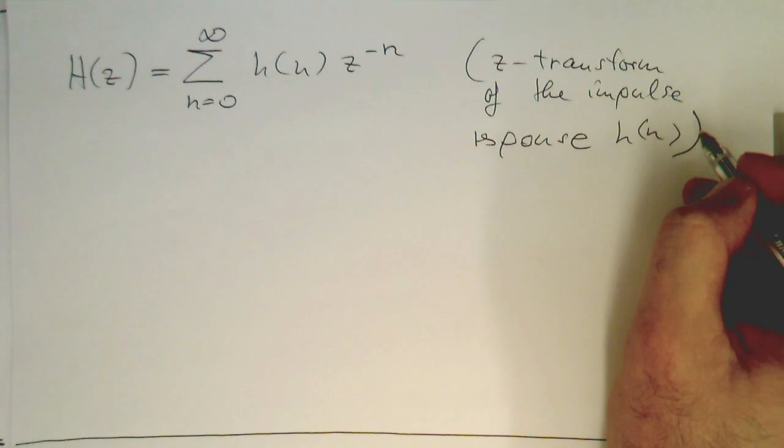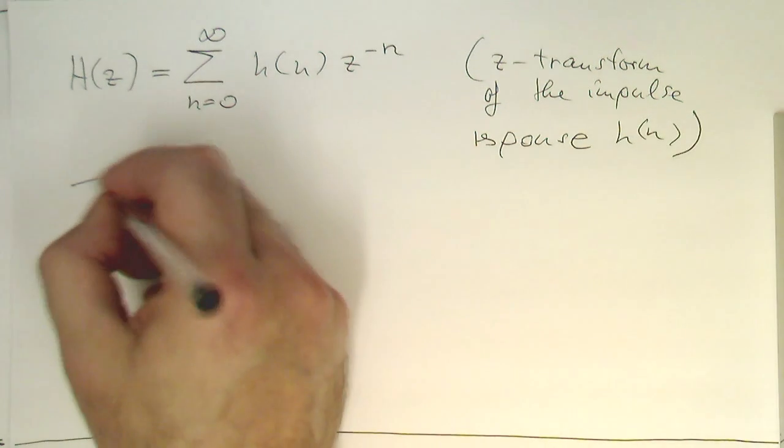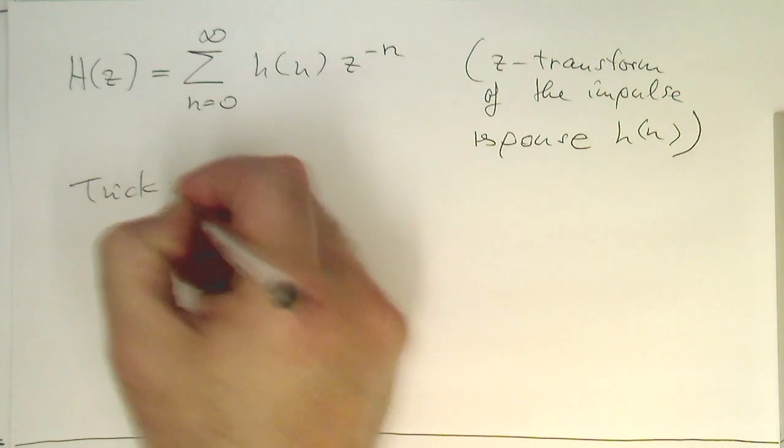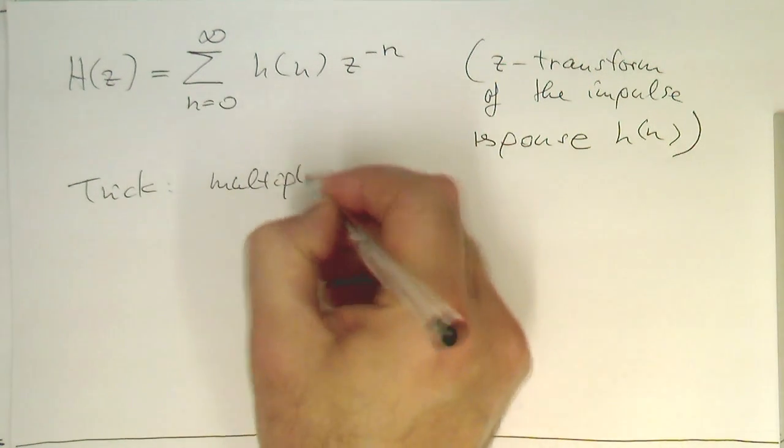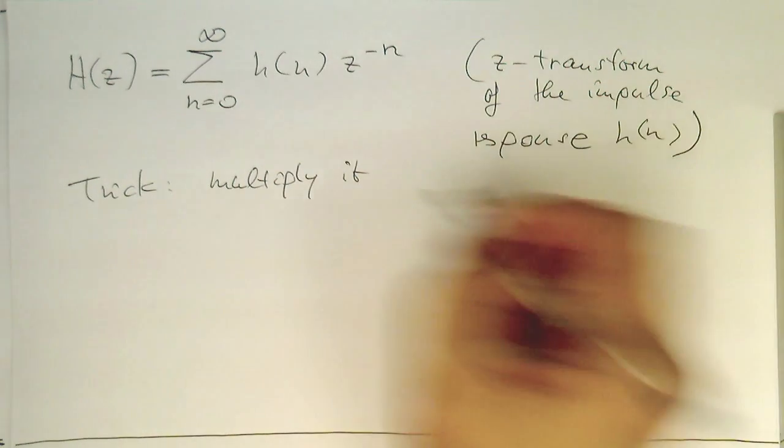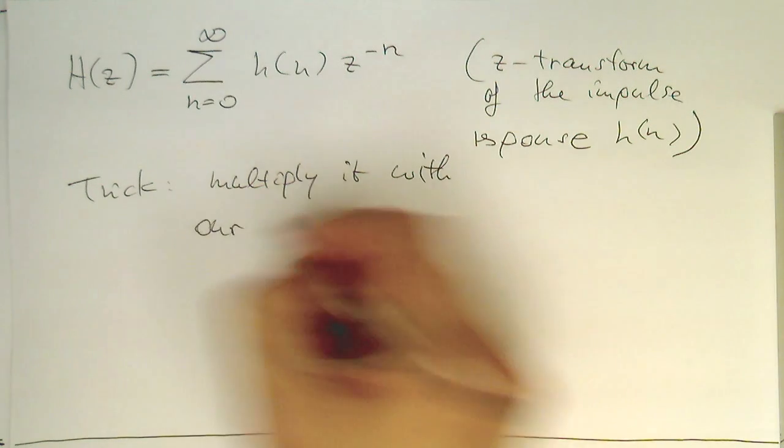We do that. And now the second idea, or the trick is, we multiply it with our signal.